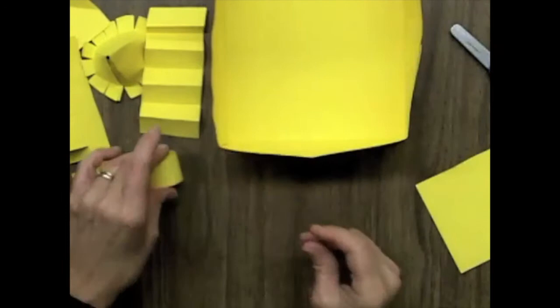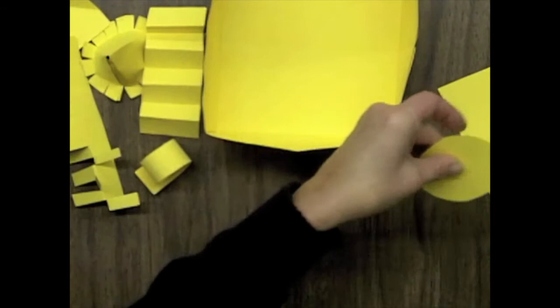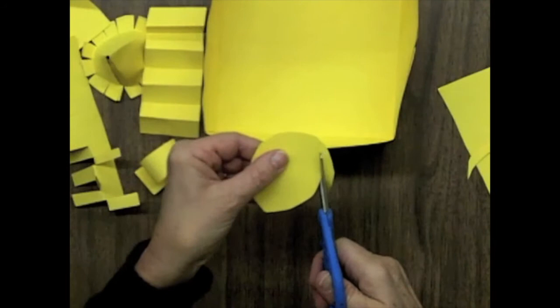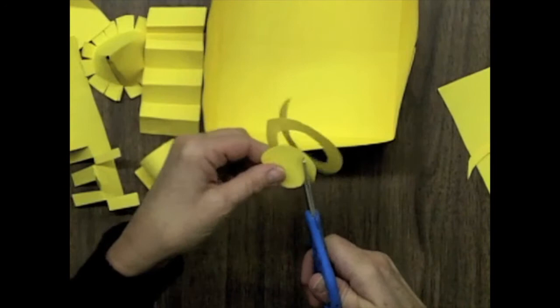Or to make a spiral, you start with a circle that you've cut out. And then you start on the edge. And you cut all about a quarter of an inch from the edge and just keep cutting around, working your way in to the middle of the circle. And when you get done with that, you'll have a spiral. So that's another thing you could add.